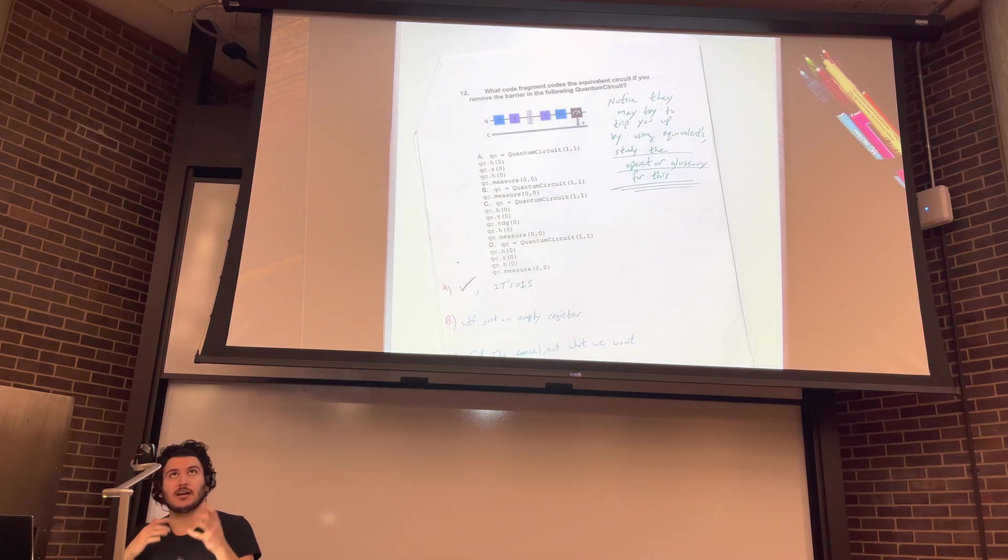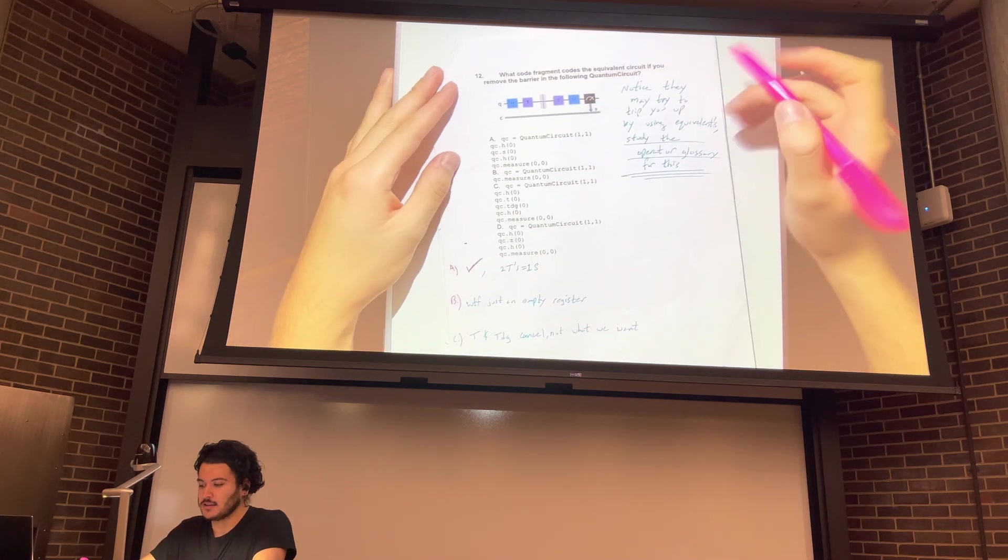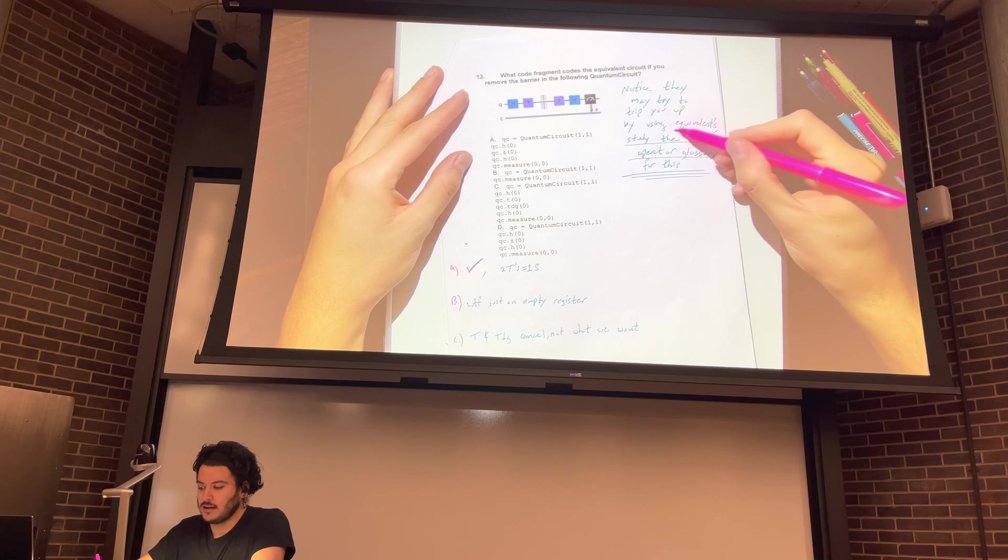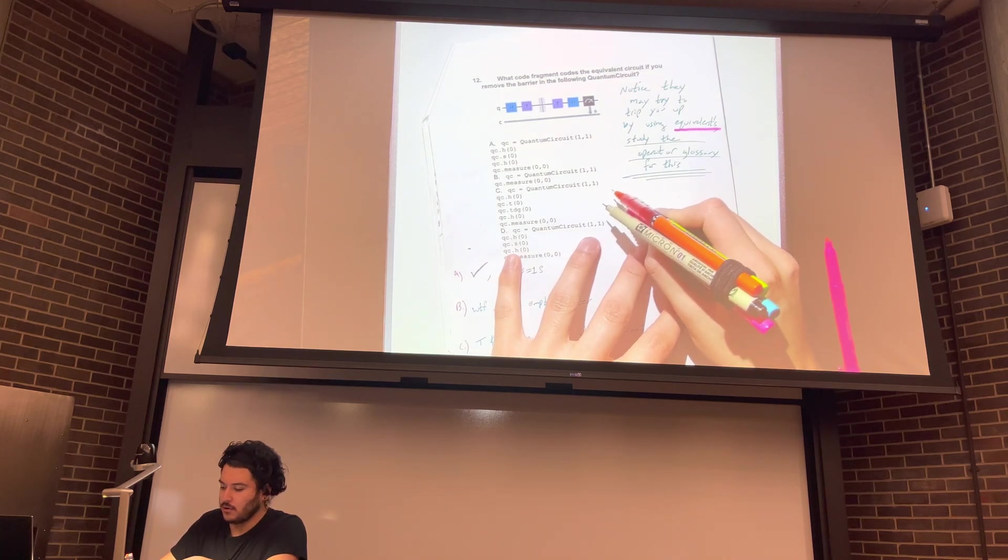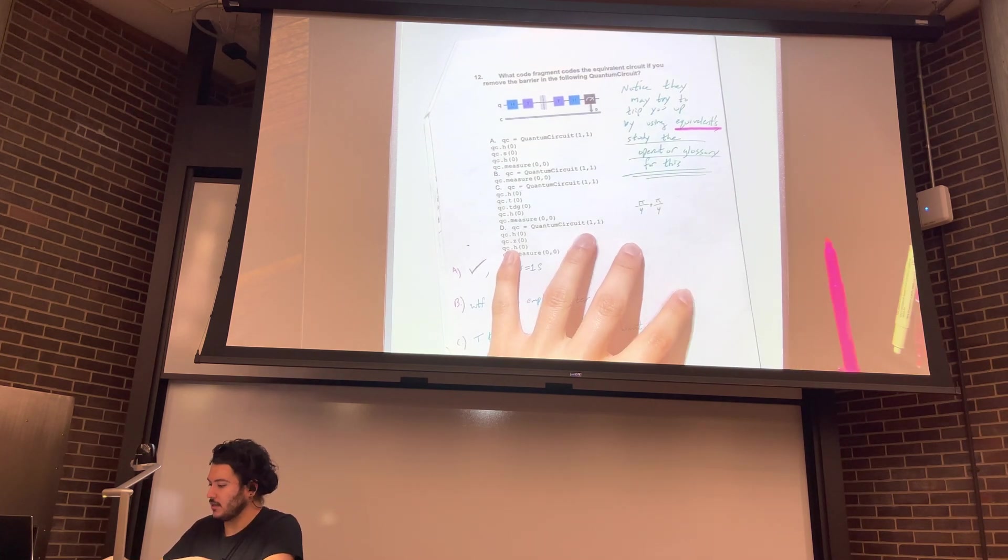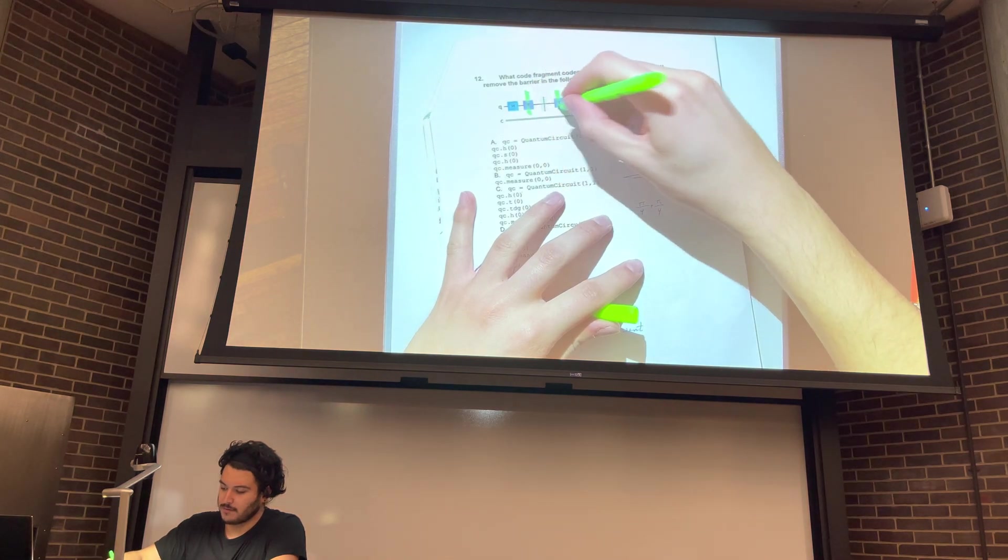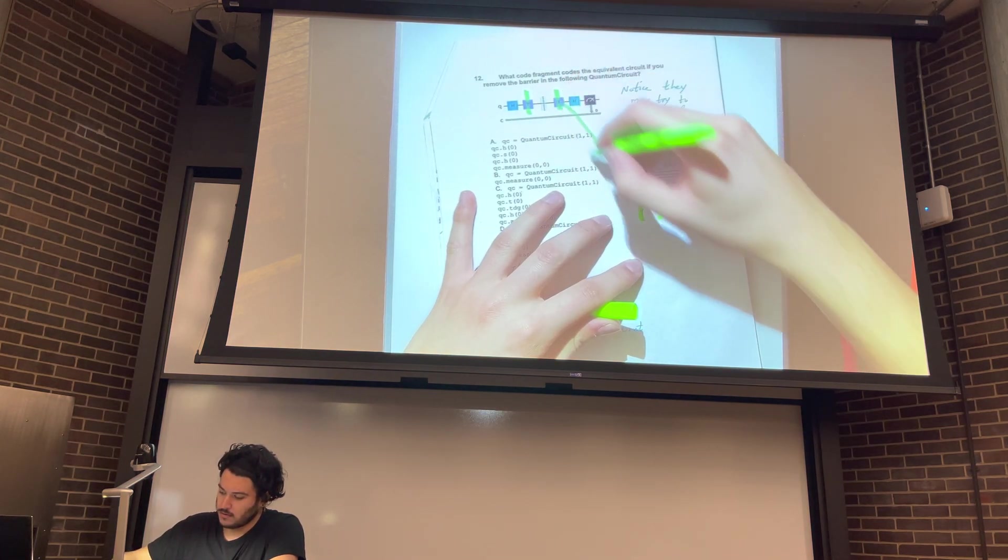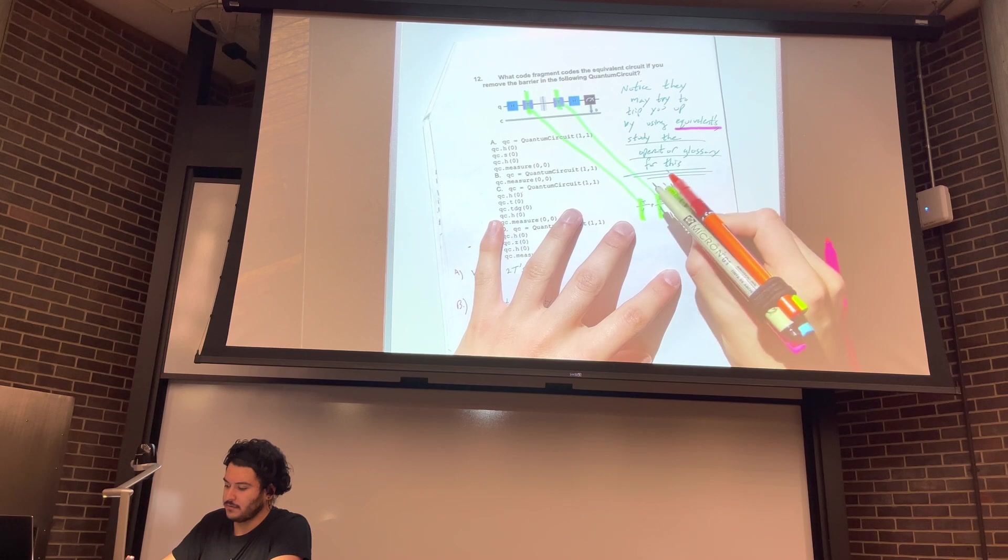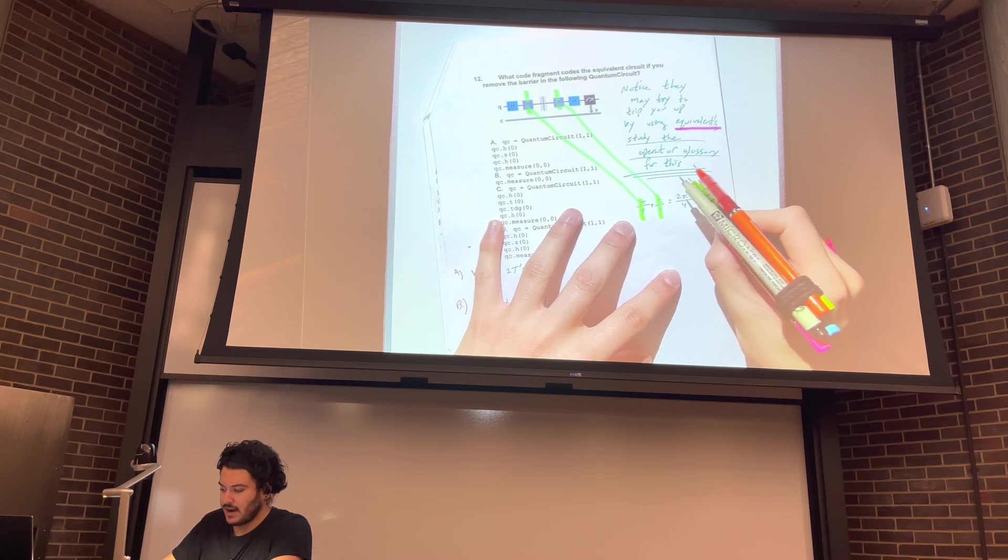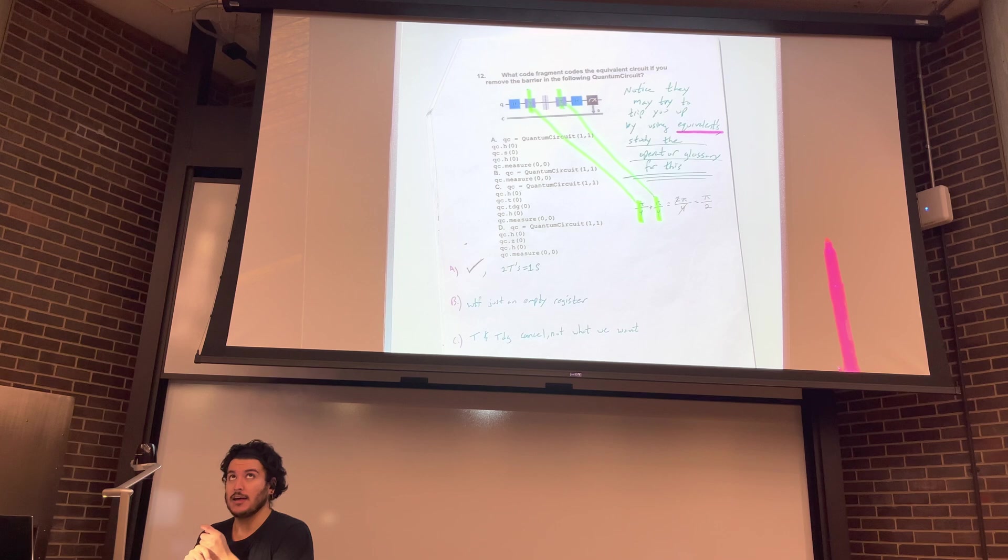So, okay, we saw T is pi over four and then S is pi over two. So let's see how this factors into this problem. So again, notice they may try to trip you up by using equivalence. So if we do the math real quick. We did this before, but pi over four plus pi over four, which is what we're seeing here. It's this, pi over four, this pi over four. And that equals two pi over four, which simplifies to pi over two. So pi over two is the value for S gate.